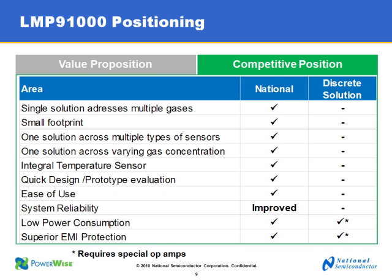This slide outlines the major differences between our solution and the discrete solutions used today. We have a very strong size and power benefit. For toxic gas detection platforms, size and power are critical because applications often require a small form factor. Power consumption is a major concern since these are intrinsically safe, portable devices. Our solution in a 14-pin LLP package is extremely small with low power consumption, making it perfect for these applications. Additionally, one solution addresses a plethora of gases and sensors, replacing multiple discrete solutions and leading to inventory reduction on your end.